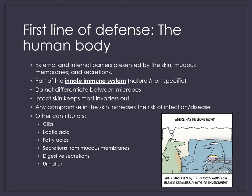Some other contributors to the first line of defense include cilia — those cells lining the respiratory system have special cilia that act like an escalator, pushing debris up and out. Also, urination and elimination of things helps, and we also shed bacteria in our feces as well.